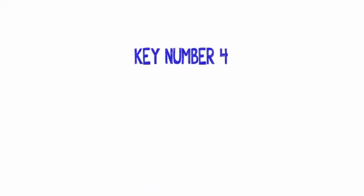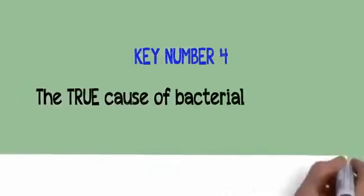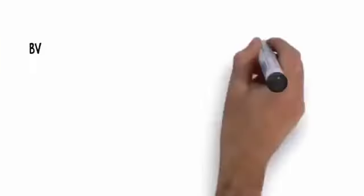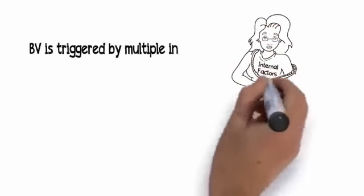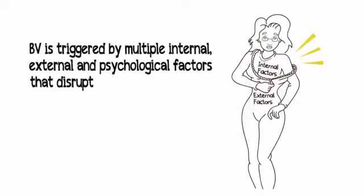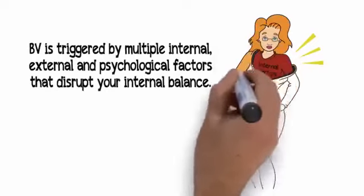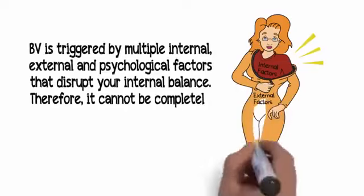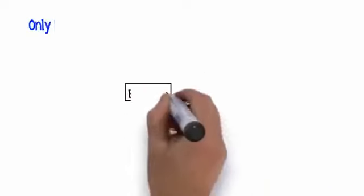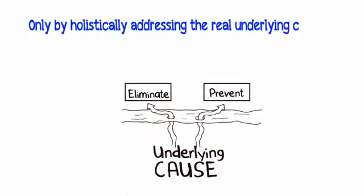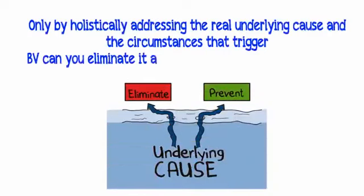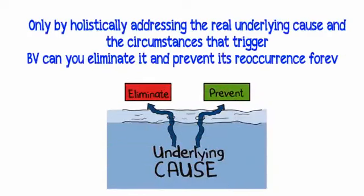Key number four: the true cause of bacterial vaginosis and the only way to cure it permanently. BV is triggered by multiple internal, external, and psychological factors that disrupt your internal balance. Therefore, it cannot be completely healed by tackling the external symptoms alone. Only by holistically addressing the real underlying cause and the circumstances that trigger BV can you eliminate and prevent its reoccurrence forever.